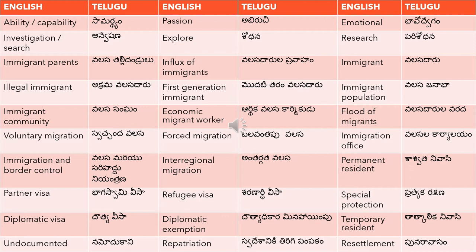Voluntary migration means 'svechanda valasa' — 'svechanda' means without coercion, free-willed or voluntary. Forced migration means 'balavantapu valasa' — the opposite of voluntary, meaning involuntary or forced. Immigration office means 'valasala kariyalayam' — 'kariyalayam' means office and 'valasala' means immigration. Immigration and border control means 'valasa mariyu sarihaddu niyantrana'.